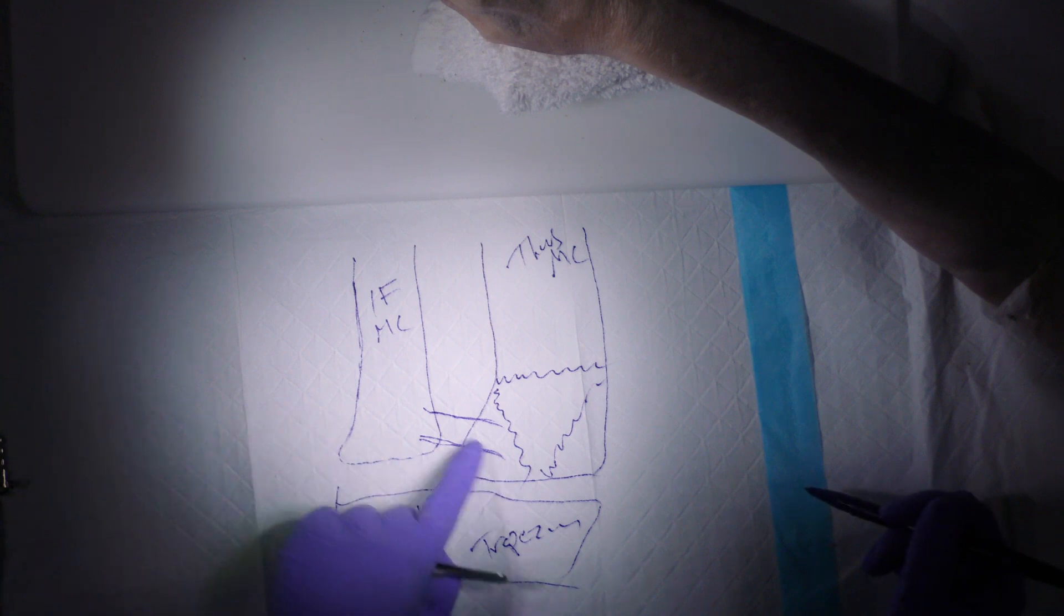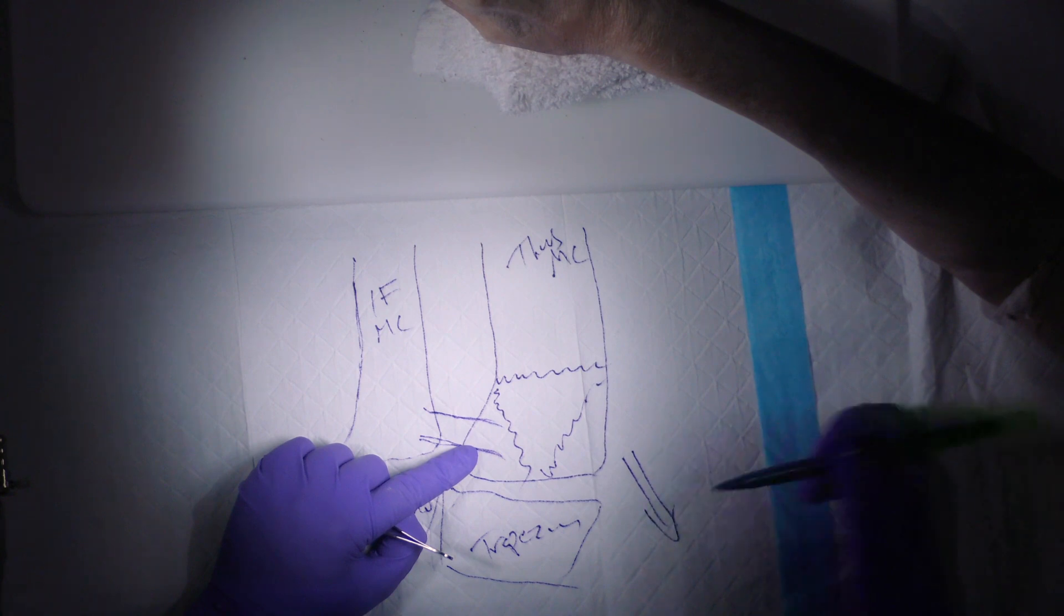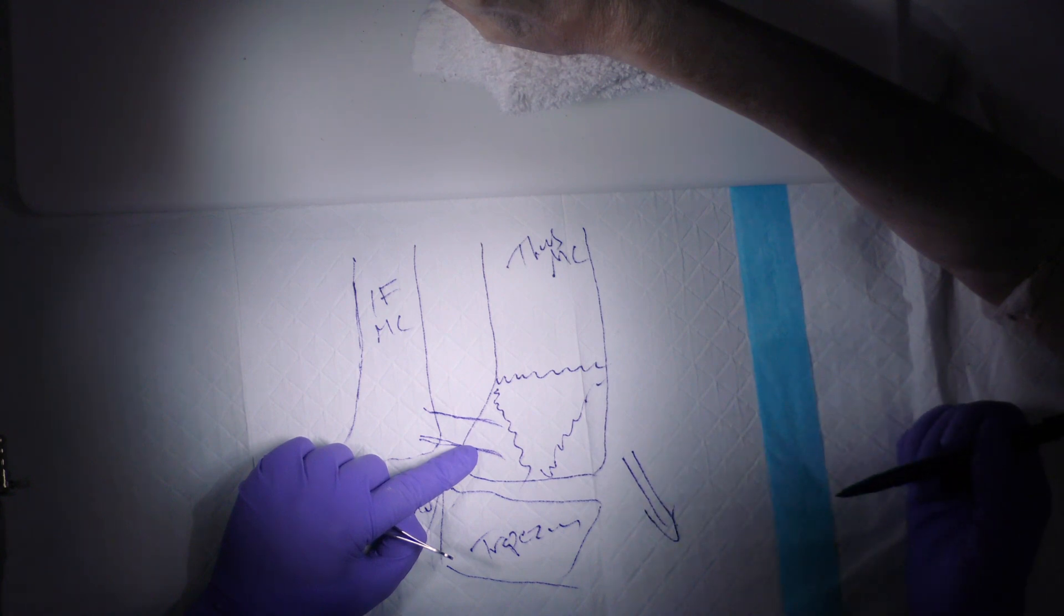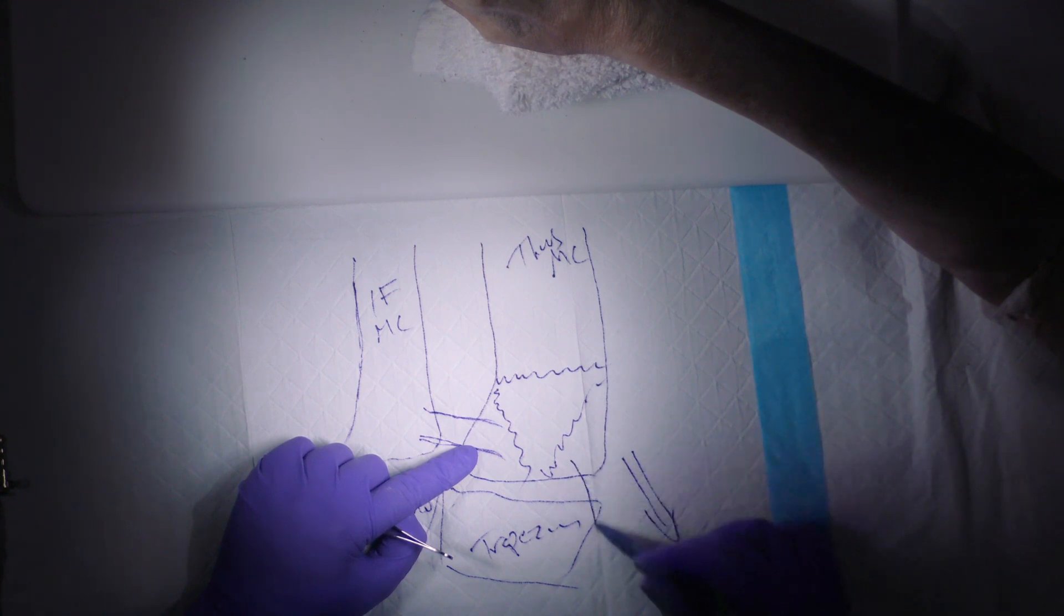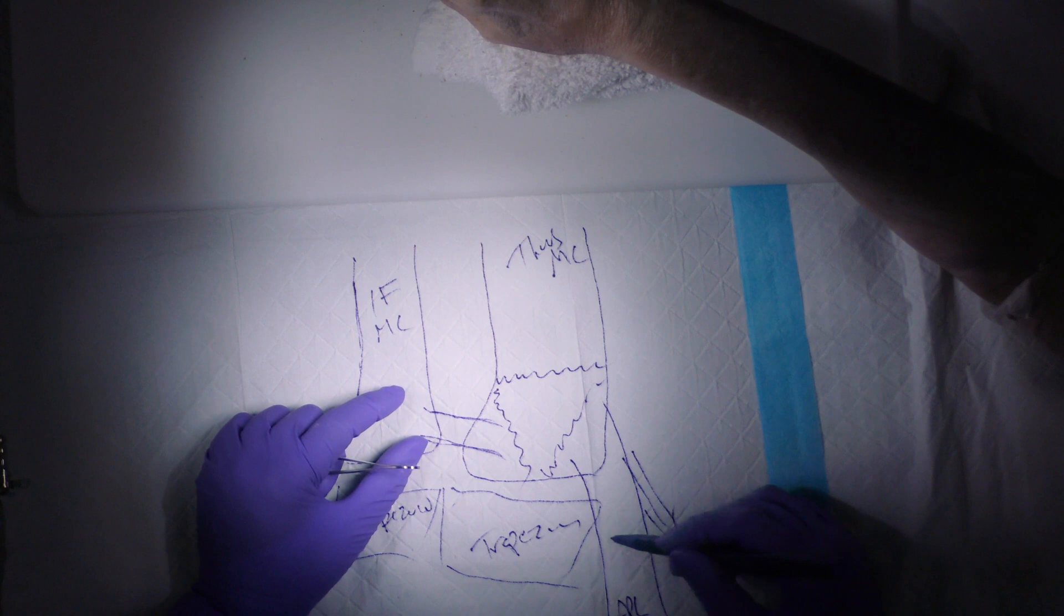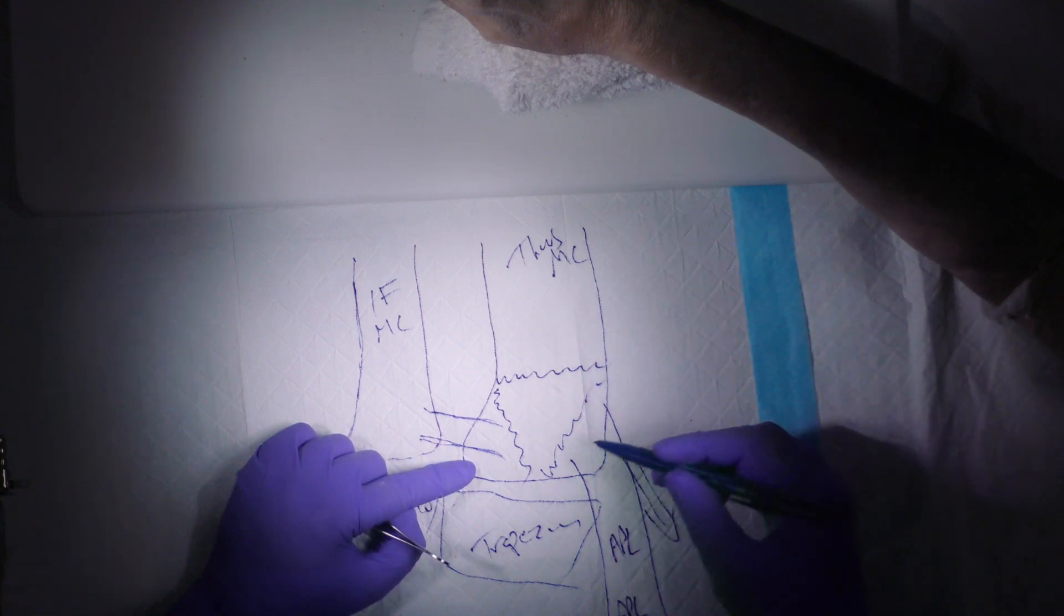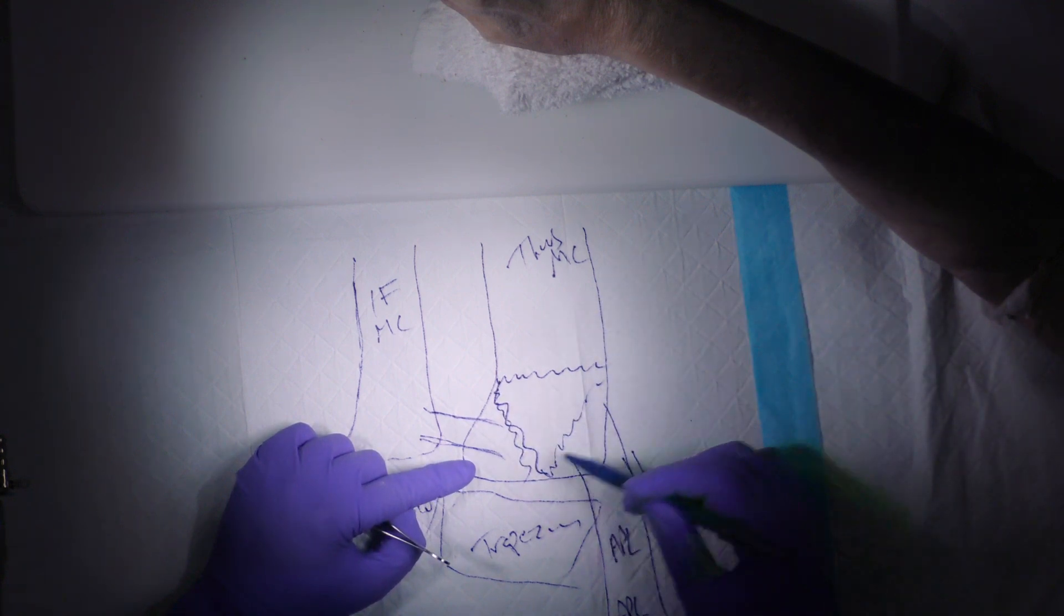The problem with Bennett fractures is there's a ligament, the beak ligament or anterior oblique ligament, that keeps that fragment with the index metacarpal. The thumb metacarpal displaces proximally because the insertion of the APL tendon has unopposed pull and displaces the entire thumb metacarpal, so you have to bring this over.